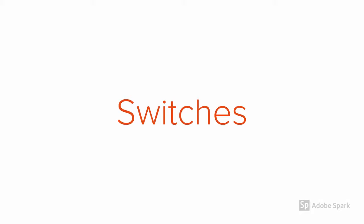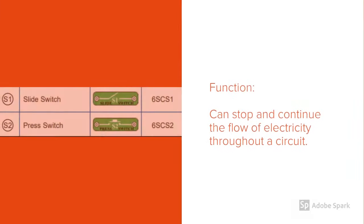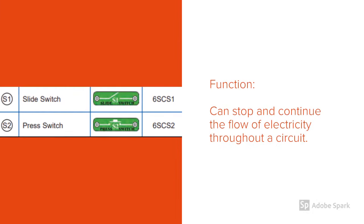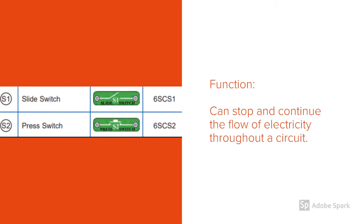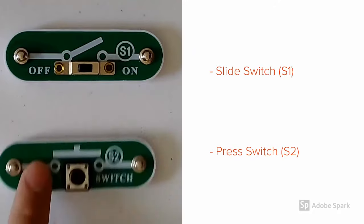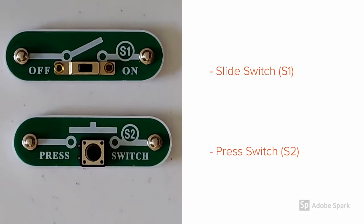Now, let's move on to switches. Switches can be used within your Snap Circuit to control the flow of electricity within your circuit. Your Snap Circuits kit should come with two switches that you can choose from. The one you see on top is called a slide switch, and the one on bottom is called a press switch.